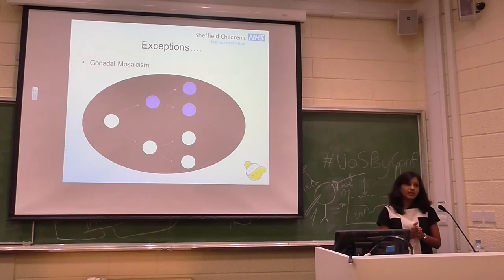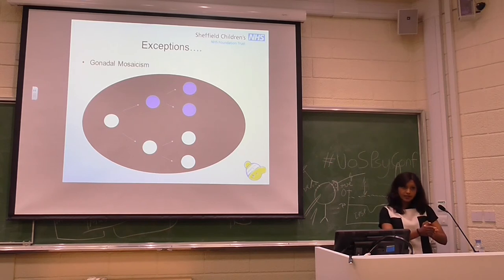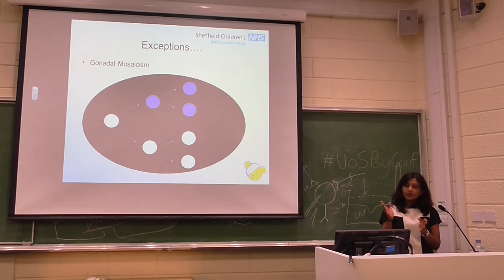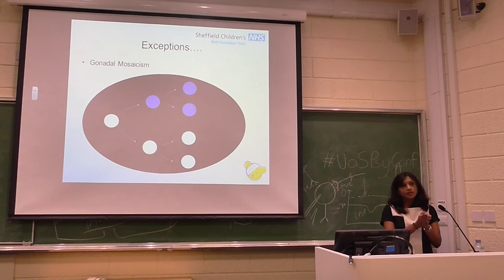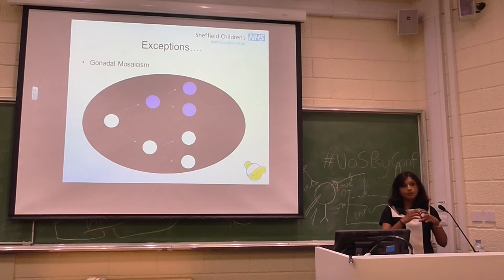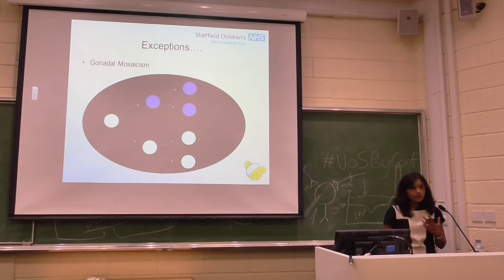And then of course you can have gonadal mosaicism. Here's a situation where it appears the child is the first person affected in the family and parents are clinically unaffected. But when you talk about recurrence risk, we've got to remember it is possible that a small proportion of germ cells — so-called sperm or egg — might contain the mutation without it being present in the rest of them. Hence there's a much higher recurrence risk than 0%, and this is something we do come across quite a lot in clinical practice.